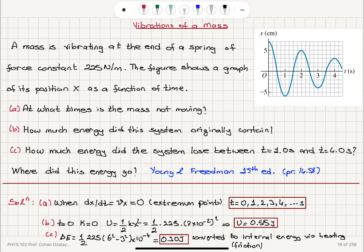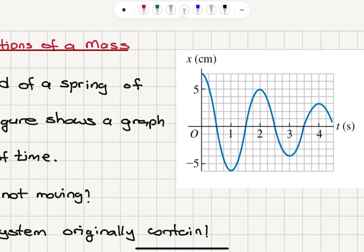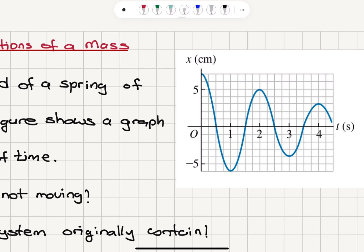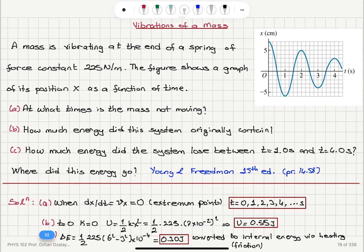So here we have talked about the damped oscillation vibrations of a mass. By looking at x as a function of t, we can see the extremum points correspond to when we have instantaneous speed equals zero. And these are at 0, 1, 2, 3, 4, 5 seconds, etc.